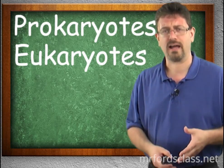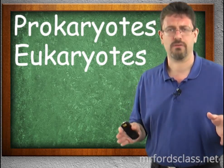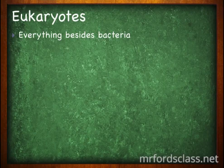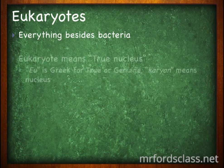Eukaryotes is everything else under the sun — animals, plants. Eukaryote means true nucleus. 'Eu' is Greek for true or genuine, and 'karyon' means nucleus.